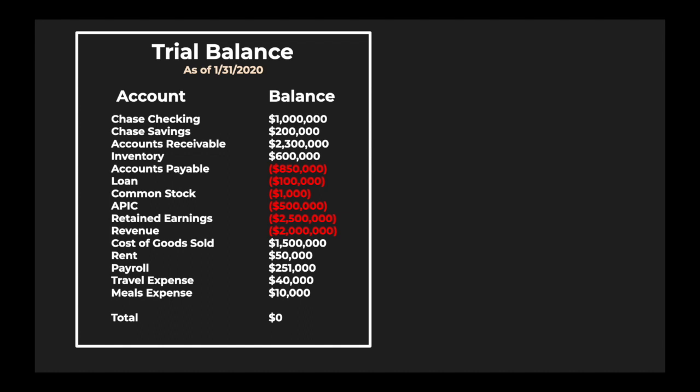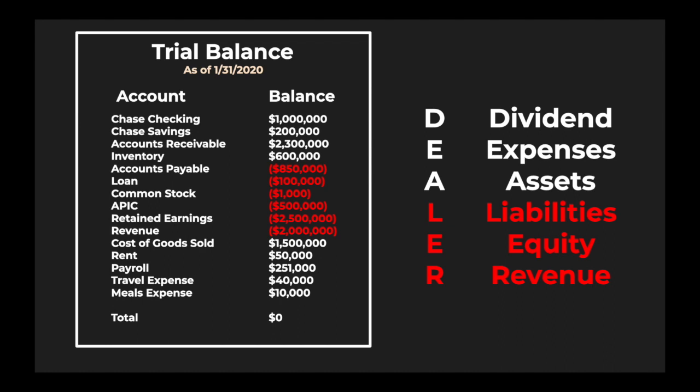You have to remember that assets will have a debit nature and liabilities will have a credit nature. To help you remember all that, let's look at this mnemonic here, which is DEALER — D-E-A-L-E-R — which stands for Dividends, Expenses, Assets, Liabilities, Equity, and Revenue. This is the easiest way to remember, guys.